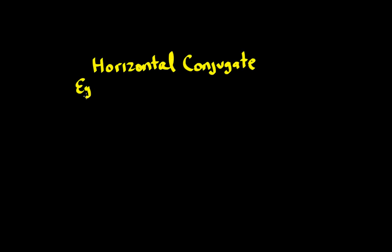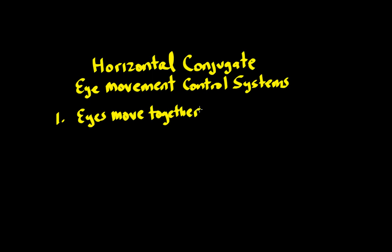After watching this video, you should be able to describe the pathway of horizontal conjugate eye movement control systems. The key component is that the eyes move together - that's what the conjugate part means. In this case, we're talking about moving the eyes right or left.